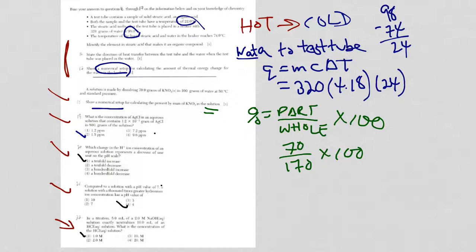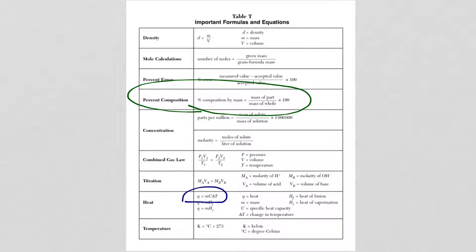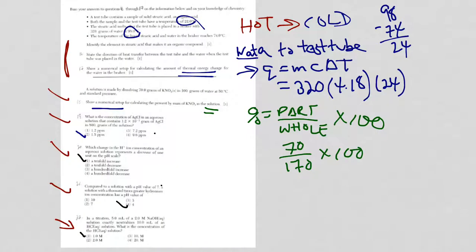For question 17, numerical setup for the amount of thermal energy change for water. Of course, I went ahead and blocked this in the beaker. So Q is equal to MC delta T, right here on the reference table, down here in the heat equations. And there it is.